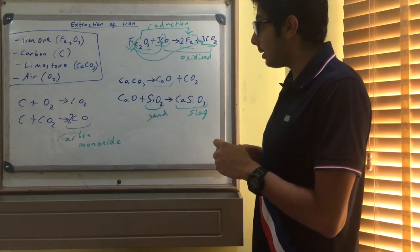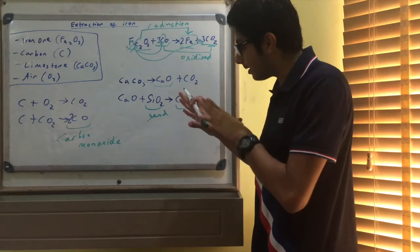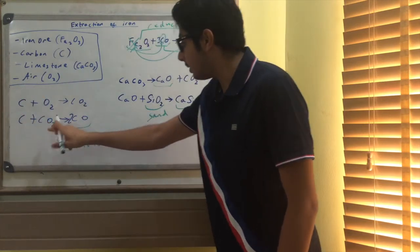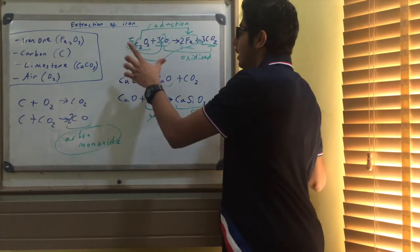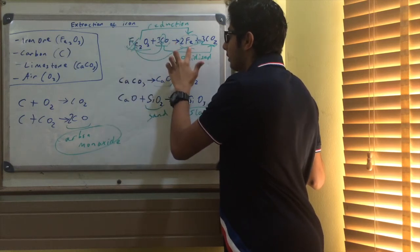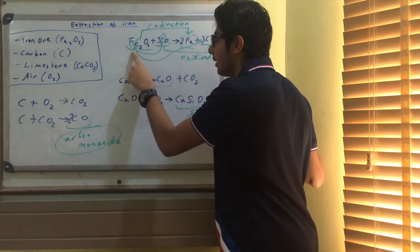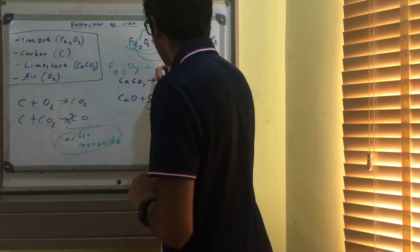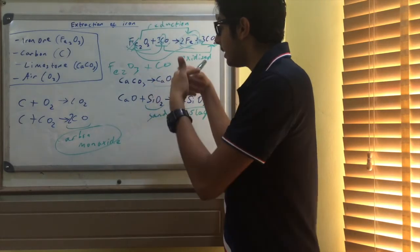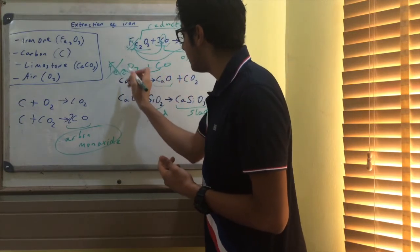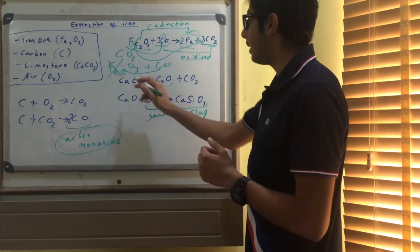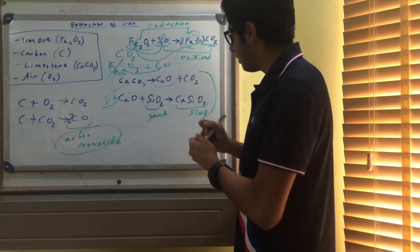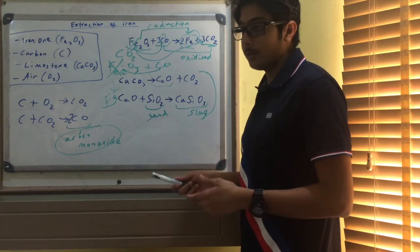To summarise: carbon reacts with oxygen to give carbon dioxide; carbon then reacts with carbon dioxide to give carbon monoxide; iron oxide is reduced to iron because the carbon from the carbon monoxide displaces the iron — carbon is higher in reactivity than iron, so it displaces it, giving carbon dioxide and leaving iron on its own. That's the extraction of iron.